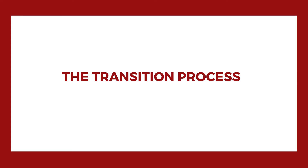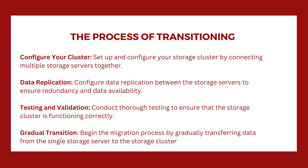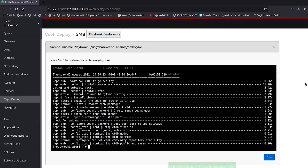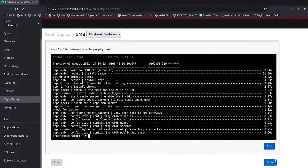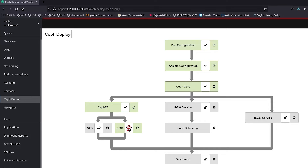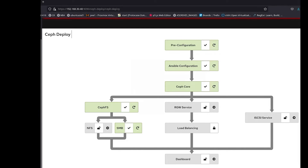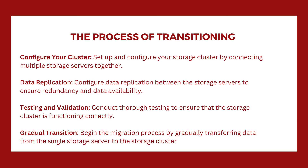Now that the plan is in place and your hardware and network infrastructure is ready for the transition, ensure that you do the following. Configure your cluster: set up and configure your storage cluster by connecting multiple storage servers together. If you have upgraded or purchased a storage cluster from 45 Drives, you'll be using our Houston server management software with a module called Ceph Deploy to ensure an easy configuration and deployment. Data replication: configure data replication between the storage servers to ensure redundancy and data availability — this may involve implementing techniques such as RAID or distributed file systems.